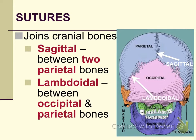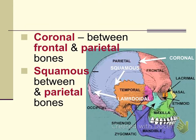The skull bones in children and babies are not connected. As the child grows, the bones fuse together, and what remains of that joining of the bones is the suture. The sagittal suture fused the two parietal bones. The lambdoidal suture joins the occipital and the parietal bone. The coronal suture joins the frontal and the parietal bone. The squamous suture joins the parietal and the temporal bone.